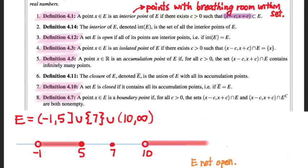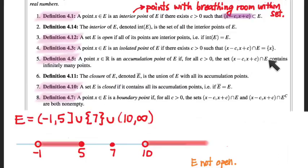Let's talk about accumulation points. An accumulation point means that for any c I choose, when I stretch out my arms — where c is the length of my arms — I'm going to intersect my set in infinitely many places. Standing at x and reaching out arms of length c, there will be infinitely many points of the set E within my arm's reach, if x is an accumulation point. This one does take a little more thinking.